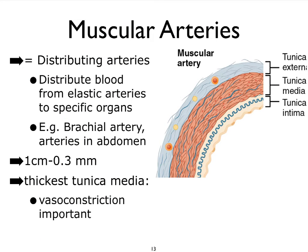On the other hand, the arteries that are responsible for getting the blood to very specific organs are called the muscular arteries, because they play a very important role in vasoconstriction and vasodilation. The tunica media with the smooth muscle fibers plays a very important role. These arteries typically have very specific names that correspond to either a region or an organ that they nourish — such as the splenic artery, the brachial artery, or the femoral artery. They have a smaller diameter, which means any change via vasoconstriction or vasodilation significantly affects blood resistance.